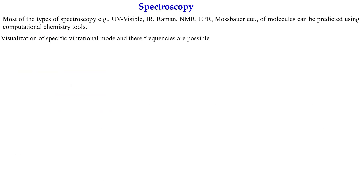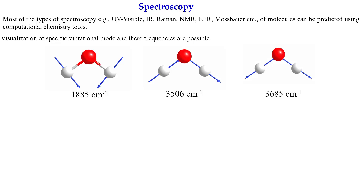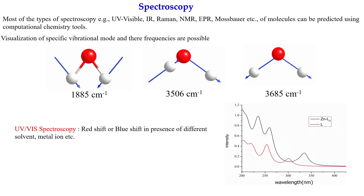You can also compute many spectroscopic parameters using computational chemistry — for example, IR, Raman, NMR, EPR, Mössbauer spectroscopy, and others. These can all be predicted using computational chemistry tools. You can also visualize specific vibrational modes. For example, water has three vibrational modes: bending vibrations, antisymmetric stretching, and symmetric stretching. All of these can be visualized and calculated. Even in experiment you cannot see them in such detail, but in computational chemistry you can.